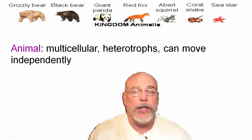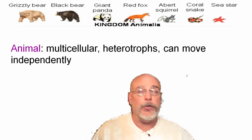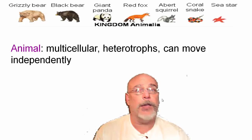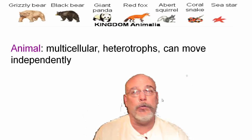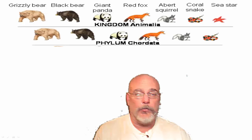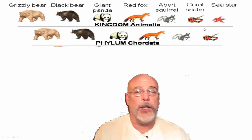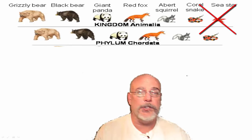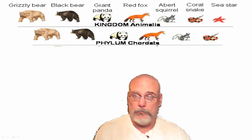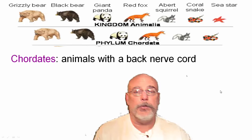Let's go back to Linnaeus's system. Here are seven organisms: a brown bear, black bear, panda, fox, squirrel, snake, and sea star. They all share something in common — they're all part of the animal kingdom. Animals are classified as multi-cellular organisms made up of two or more cells, they are heterotrophs meaning they cannot produce their own energy and must consume other organisms, and they can move independently. The next grouping is phylum Chordata — the sea star is excluded here. This group has a spinal cord and a back nerve cord.